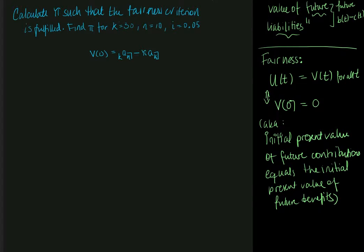By the fairness criterion, we mean that we want the present value at time t of all past payments to be equal to the present value at time t of all future payments. That is what we mean by u(t) equal to v(t) for all t. We want that to be true for all times t.